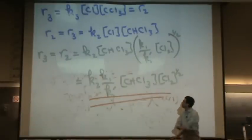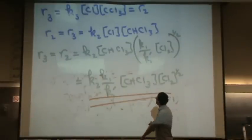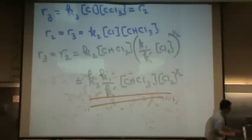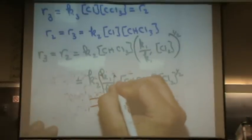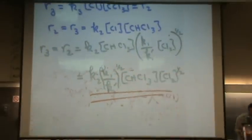How did you pull the K1 and the K1 prime out of the square root? Oh yeah, thank you. That still has the one half power. Excellent. Is that the same question? Yeah. Other questions?